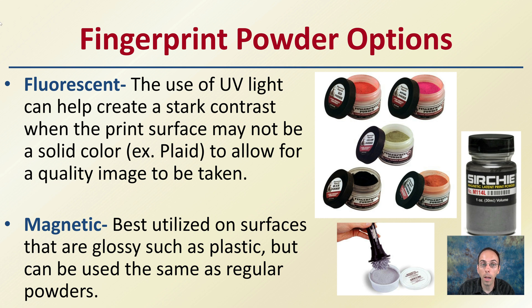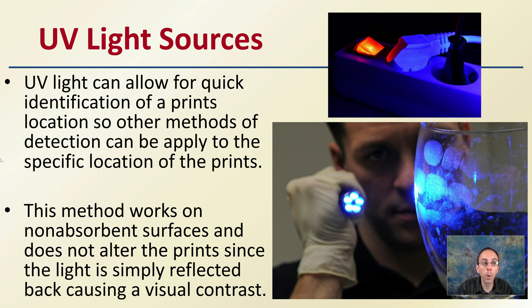There are also fluorescent powder options. The use of UV light can help create a stark contrast when the print's surface may not be a solid color — for example, on a plaid surface — allowing for a quality image to be taken. Magnetic powders are best utilized on glossy surfaces such as plastic, but can be used the same as regular powders. UV light sources also allow for quick identification of the location of prints on non-absorbent surfaces without altering the prints, since the light is simply reflected back causing a visual contrast. For example, UV can be used on glass to initially find where prints may be located, and then other methods can be implemented.